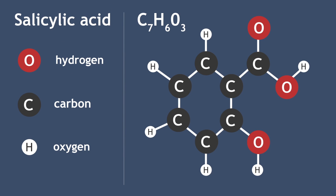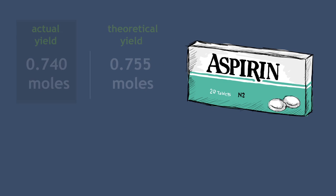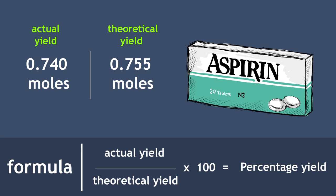Salicylic acid is used to produce aspirin. In a reaction, 0.74 moles are produced, instead of a theoretical 0.755 moles of aspirin. Pause the video now to calculate the percentage yield.